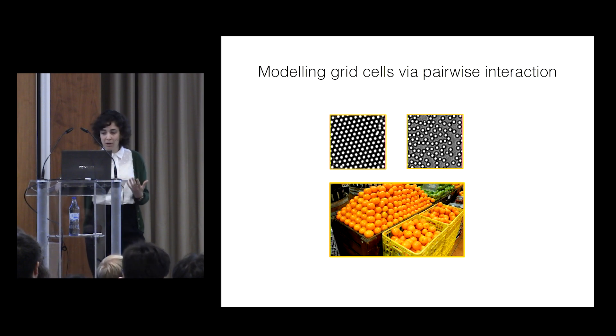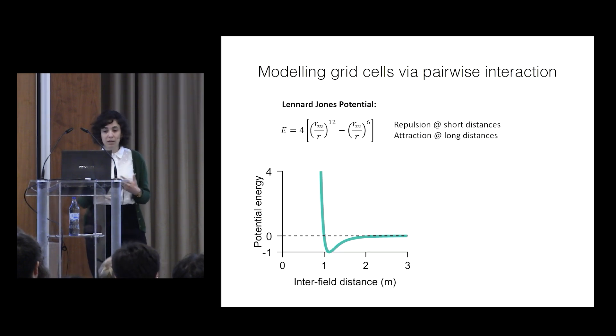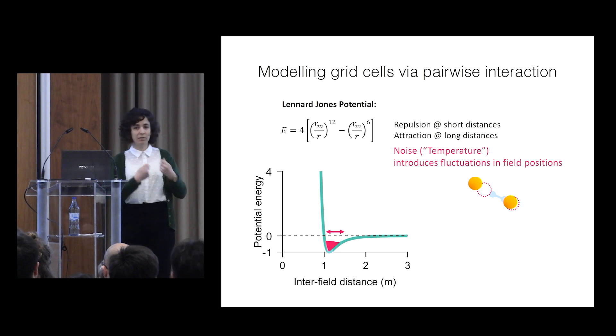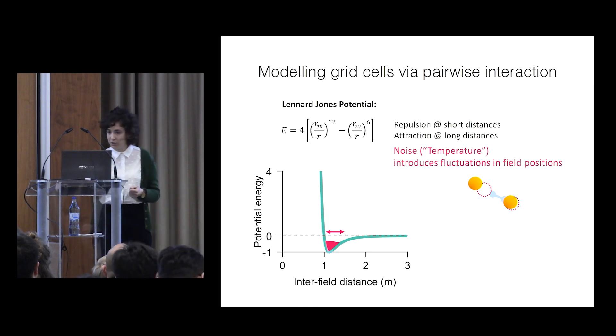we went to a common model used in systems with multiple particles, the Leonard-Jones potential, which just means that fields close by repel each other, and fields far away attract each other until they find an equilibrium distance. And we added noise to this system, which just means how much each field can deviate from its equilibrium position, and this noise was fitted to our data.